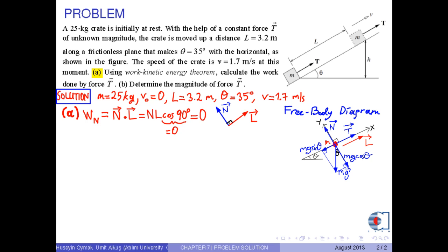The work done by the gravitational force is equal to M times G dot L. From the figure, the angle between the gravitational force and the distance is 90 degrees plus theta.